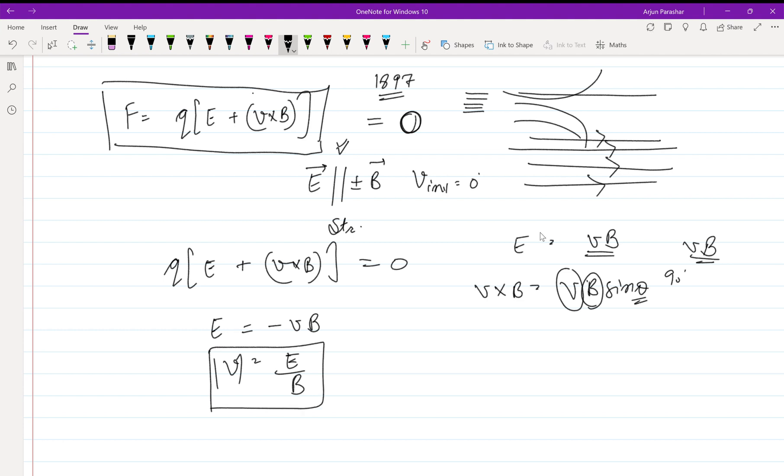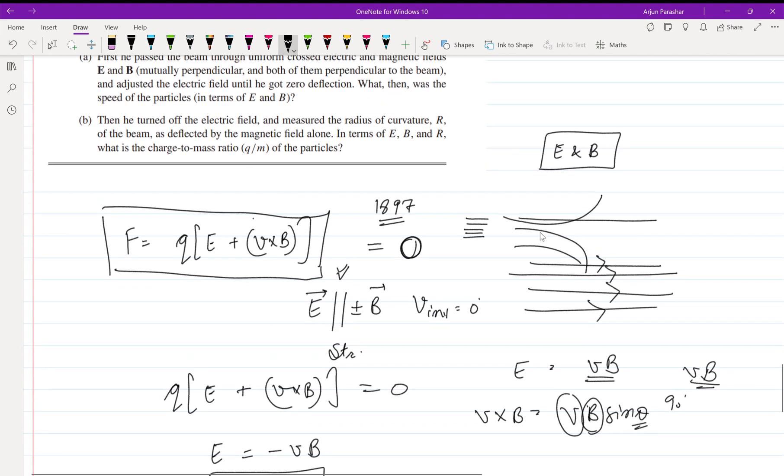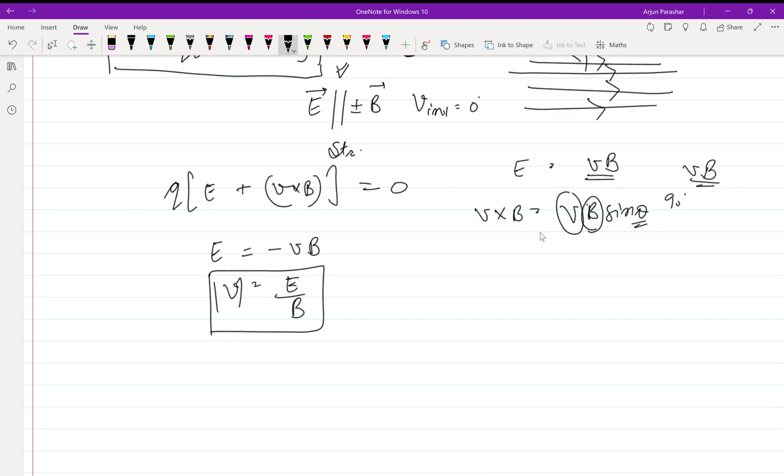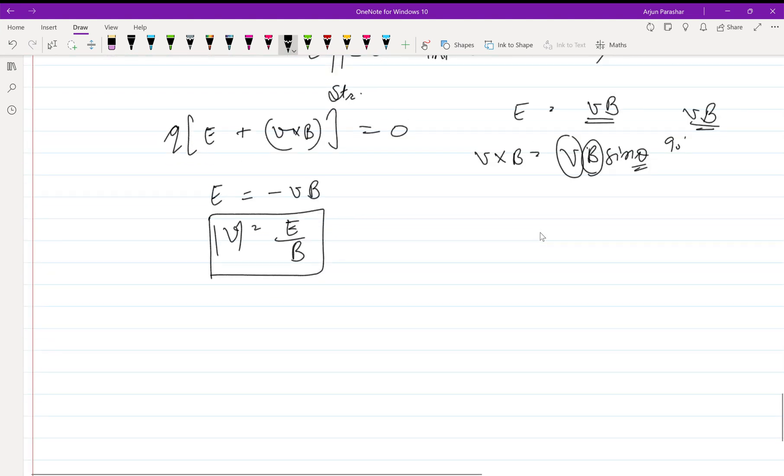So this is the velocity. What he is asking in the next question is: then he turned off the electric field and measured the radius of curvature of the beam as deflected by magnetic field alone.